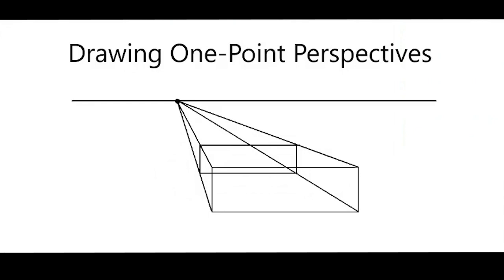And the last step is to erase all the lines that are not a part of the box, including the horizon line and the vanishing point.